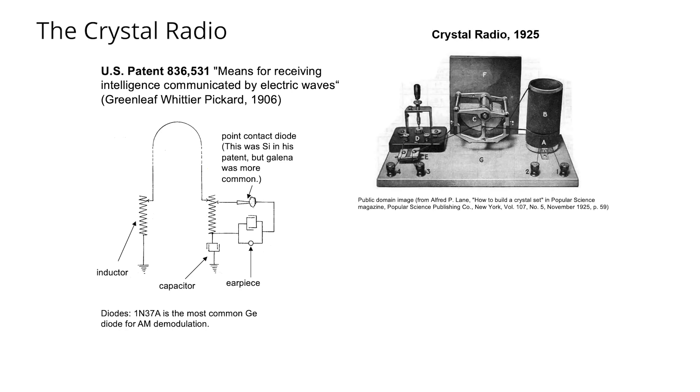This is an image of a crystal radio from Popular Science published in 1925. We can see that the inductor was approximately the size of a toilet paper tube. Right here in the center of the diagram, we're looking at a tunable capacitor that was used for tuning. Here we're seeing the point contact or the diode. And then these knobs are where the earth, ground, and the antenna could be connected.